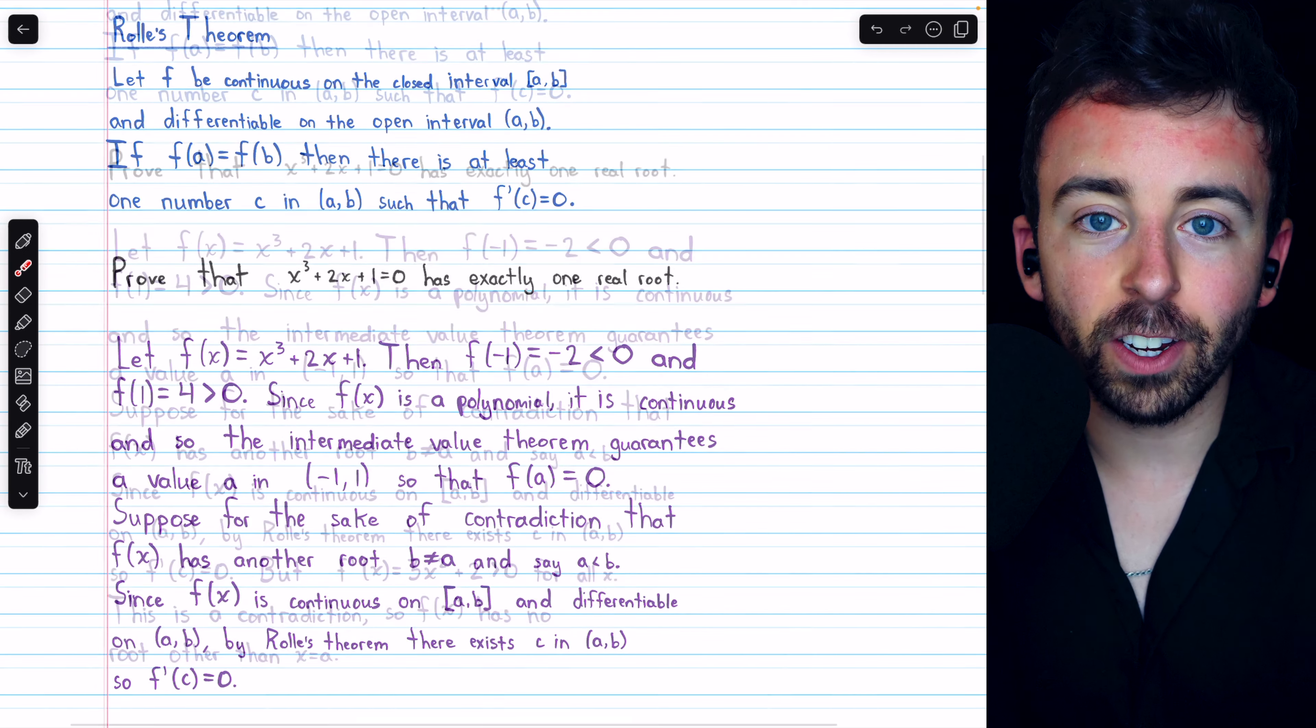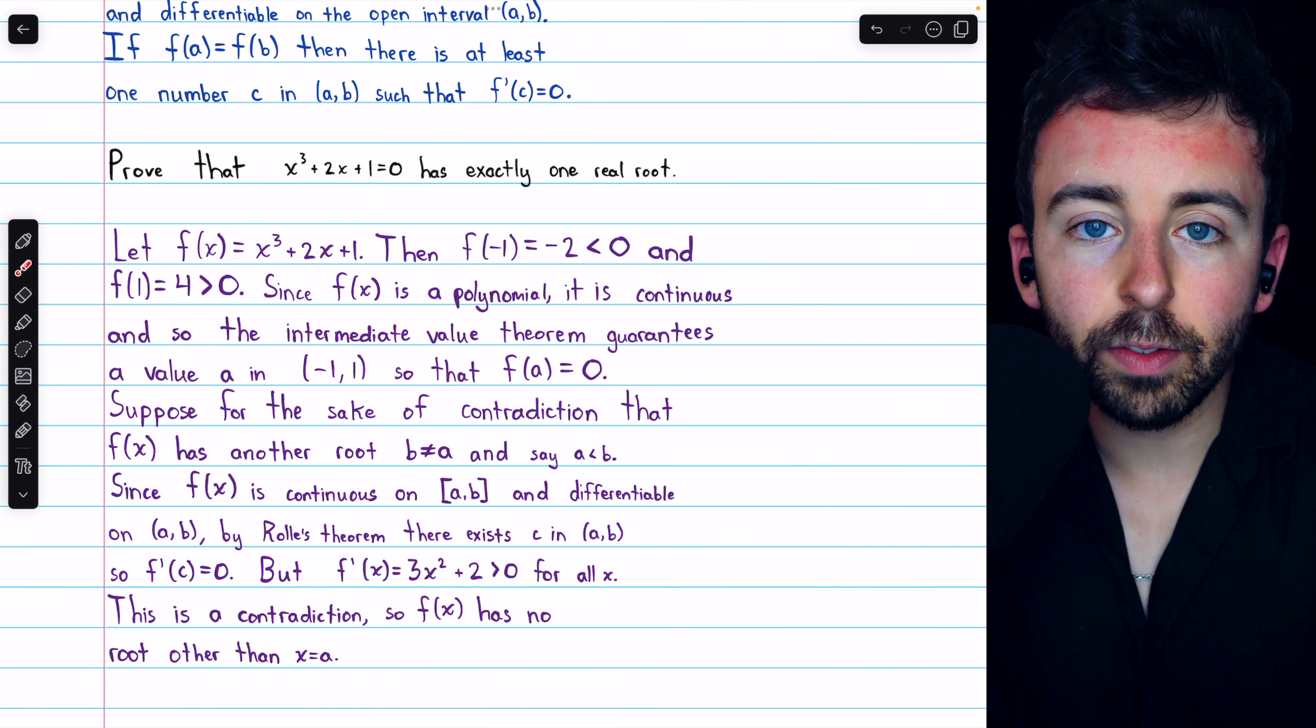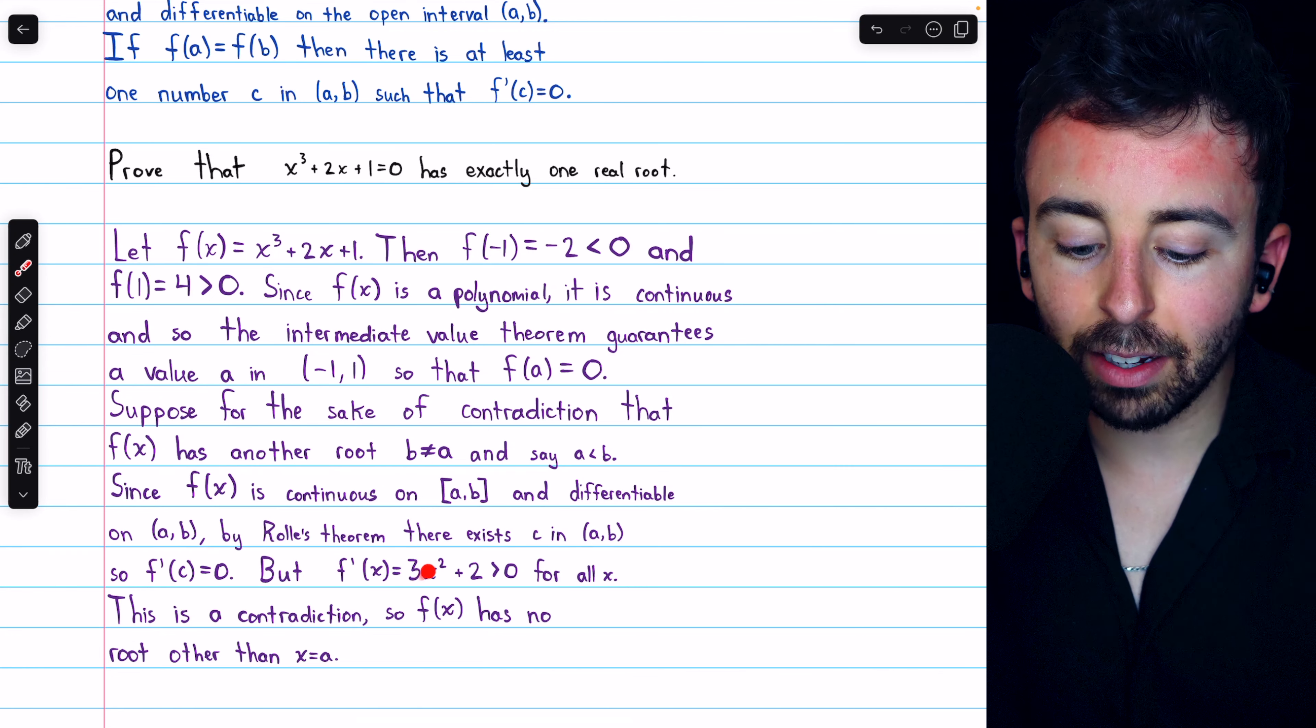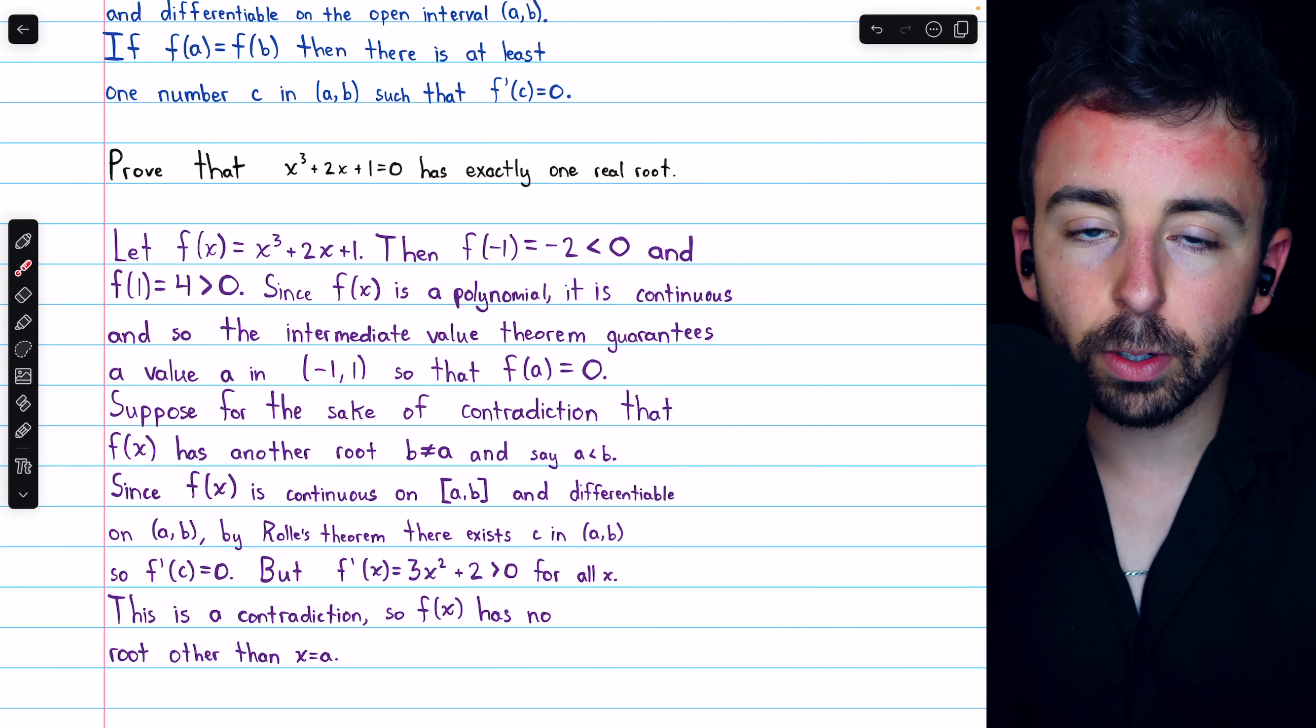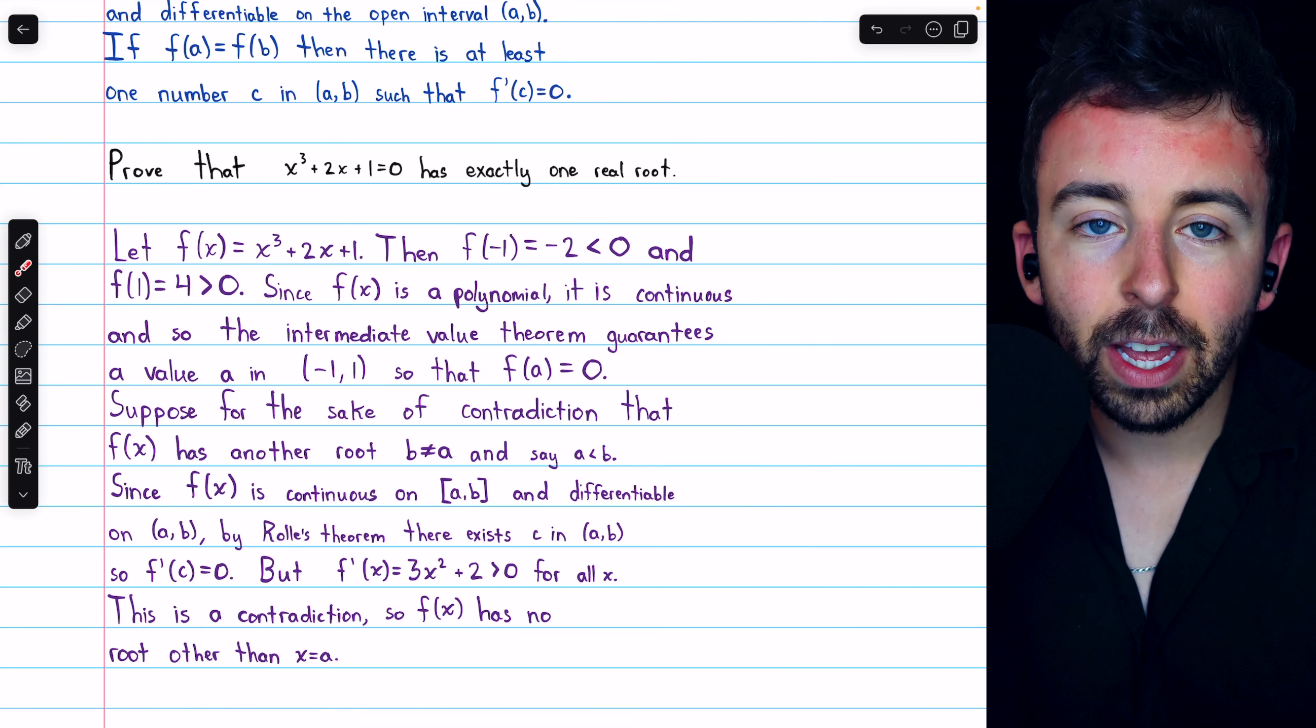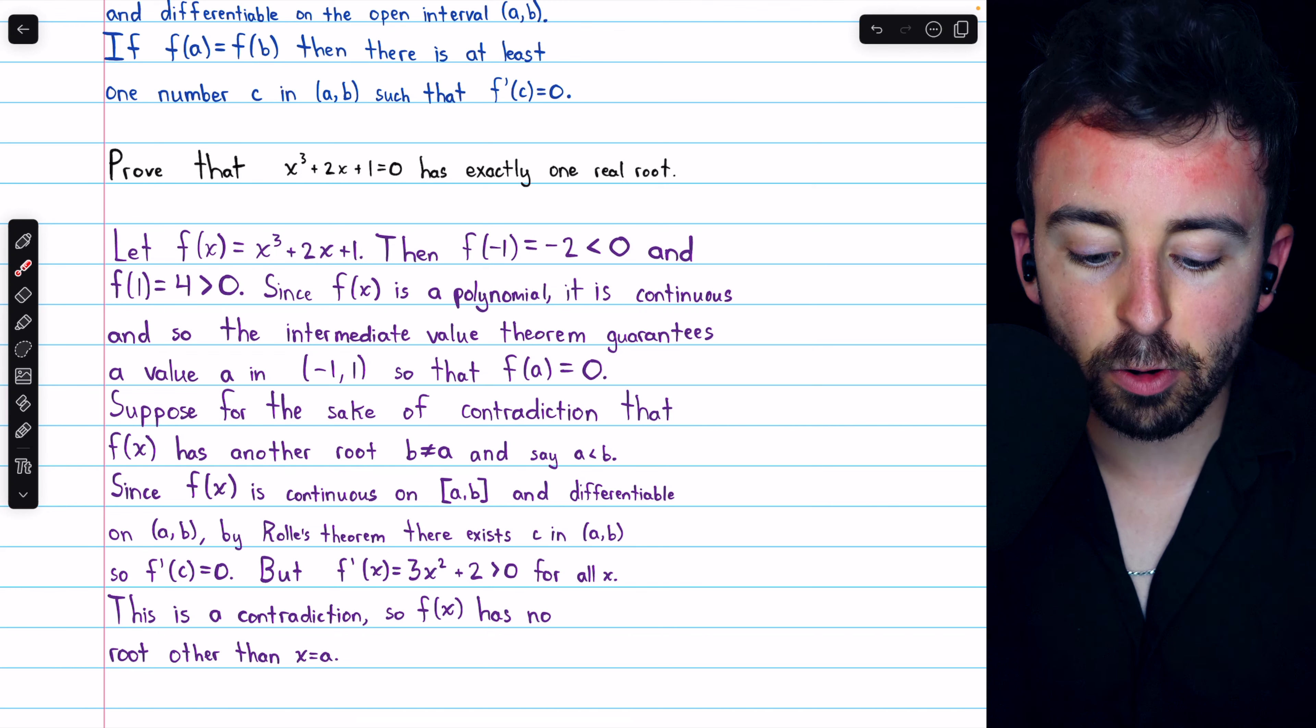And that is our contradiction, because we know what this function is, and so we can find its derivative, apply the power rule, and we find its derivative is 3x squared plus 2, which is clearly positive for all x, because it's a positive number 2, plus a non-negative number 3x squared. That's always positive, so there's no way there could be a point where the derivative is equal to zero.